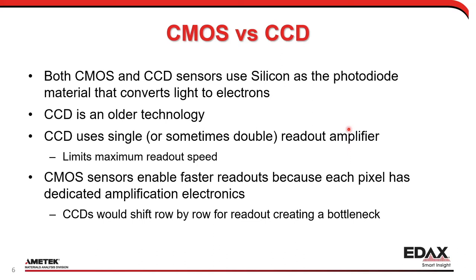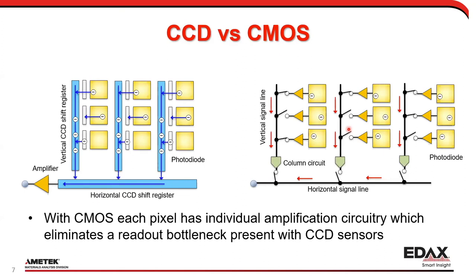CCDs use a single readout amplifier, sometimes a double, and that's what limits the readout speed. CMOS sensors enable faster readouts because each pixel has its own dedicated preamp, whereas CCDs do what's called shifting — pulling a row by row through the same preamp — which is why CCD cameras are slower than CMOS.